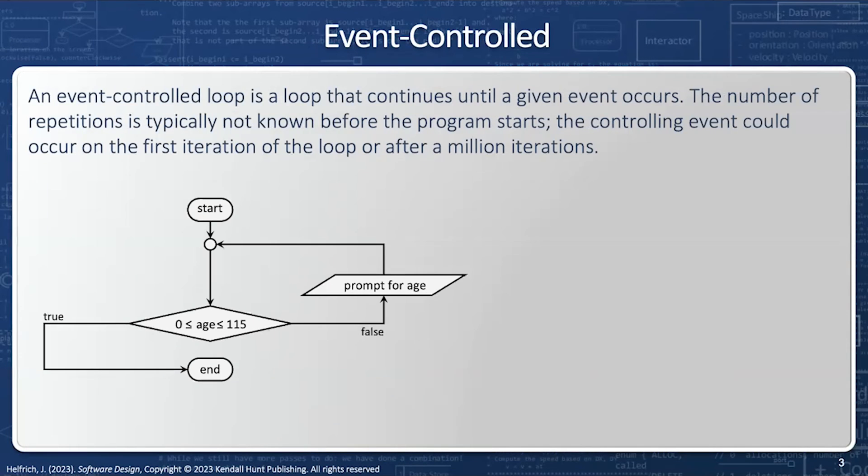Here's an example of an event control loop. I'm going to prompt the user for an age, and I'm going to keep prompting until the age is within a reasonable range. If it's not within the range, I'm going to prompt again. If it is, then I will end. Notice the user might get it right the first time, or it might be the hundredth time. We don't know at the onset.